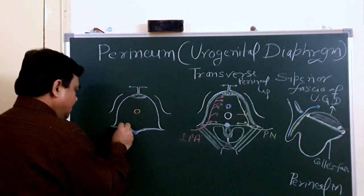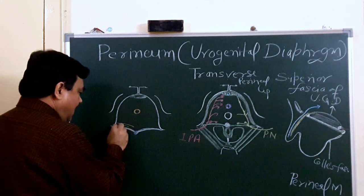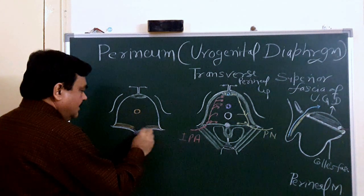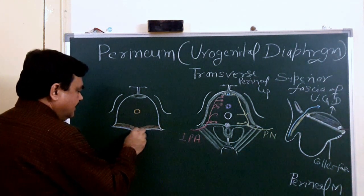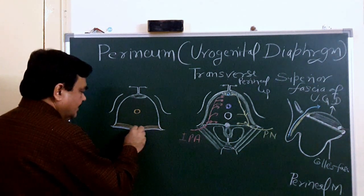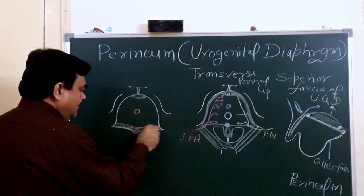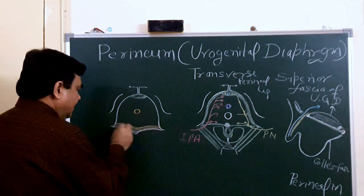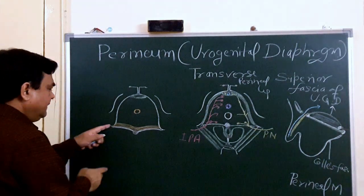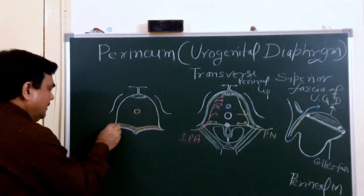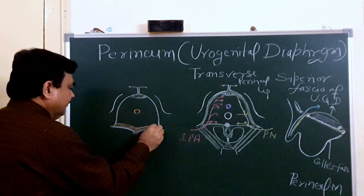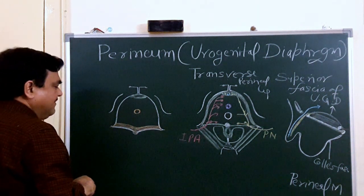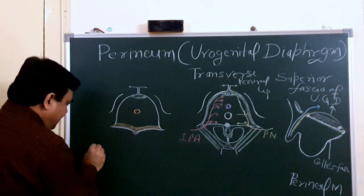Here is the transverse perineal membrane with transversely arranged fibers. These fibers arise from the fascia covering the posterior bone. This is the deep transverse perineal muscle.